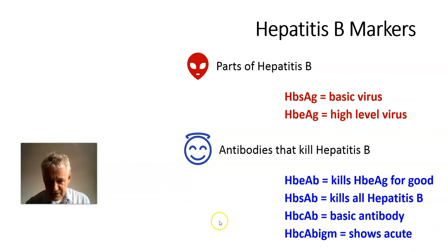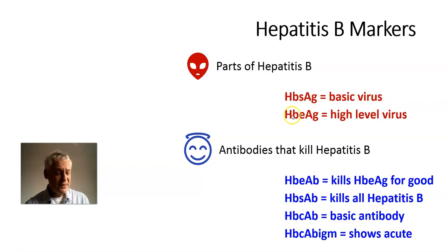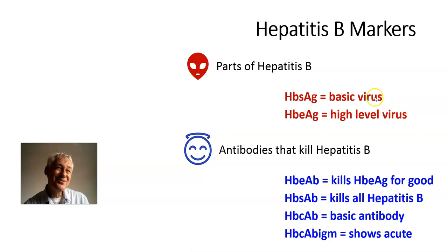Here we see the markers for Hep B. There are two parts to the Hepatitis B virus. We have surface antigen, HBSAG, and that is the basic Hep B virus. 90% of patients test and they have Hep B — the basic virus. 10% of patients have HBEAG, the envelope antigen, and that's a higher level. Instead of a level of between zero and a quarter of a million, with the EAG you get levels of one million to two billion. That's why it's so important to know what type of Hep B you've got.